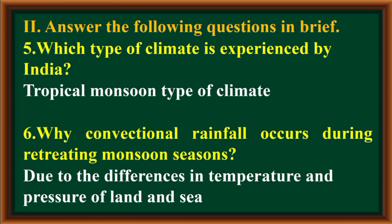Second main: Answer the following questions in brief. Which type of climate is experienced by India? India experiences a tropical monsoon type of climate. Why does convectional rainfall occur during the retreating monsoon season? Due to the differences in temperature and pressure of land and sea.